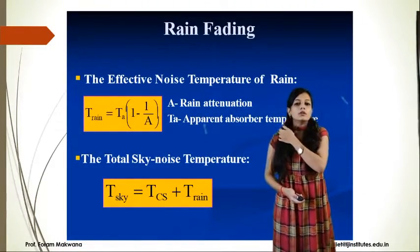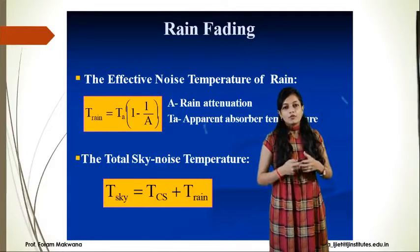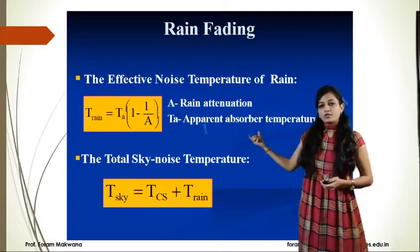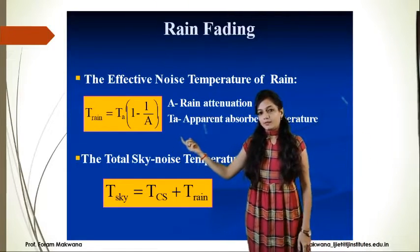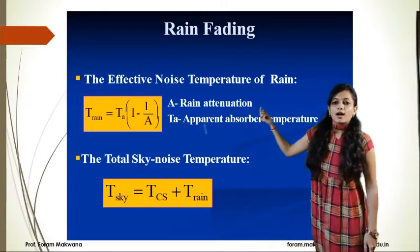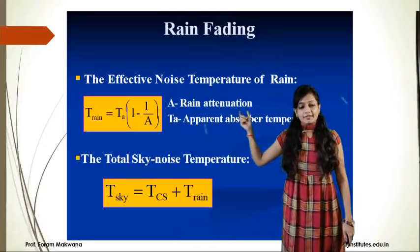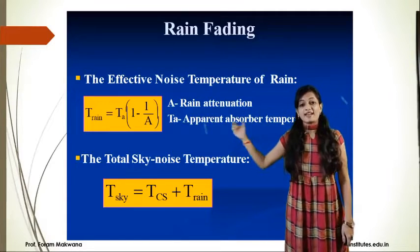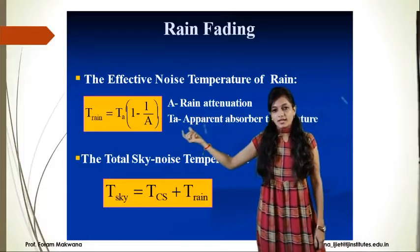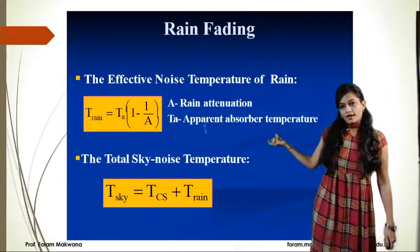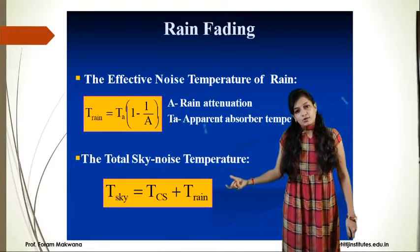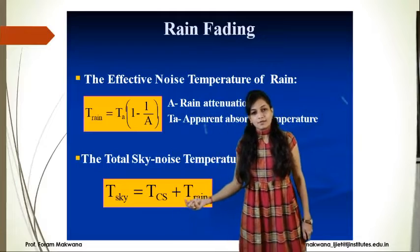When considering rain fading, we need to understand the effective noise temperature of the rain. The temperature due to rain is T_rain = T_A × (1 − 1/A), where A is the rain attenuation and T_A is the apparent absorber temperature. The total sky noise temperature T_sky equals T_Cs plus T_rain.